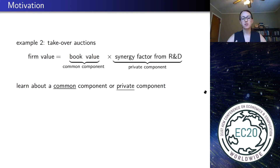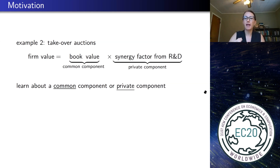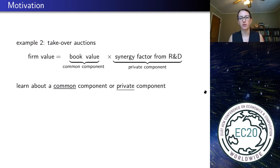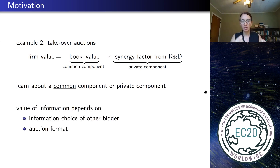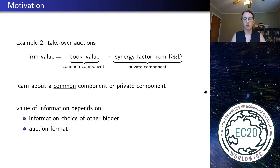Think about a firm that is for sale. The firm has some assets, some book values — no matter who acquires the firm will get this book value, a common component. But firms might differ in their overlap in research and development, some synergies they have with the firm for sale — a private component. So if in order to do due diligence there's too much information to process, they have to decide: focus on the common component or the private component, like their individual synergies.